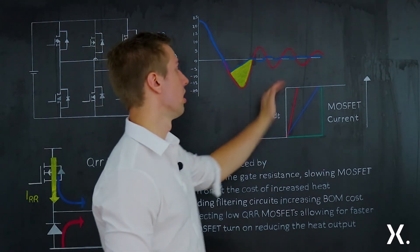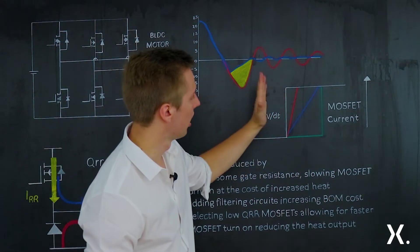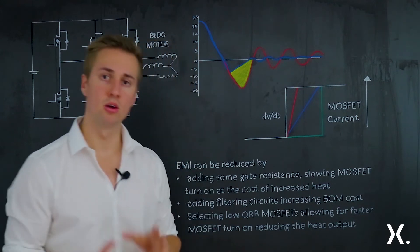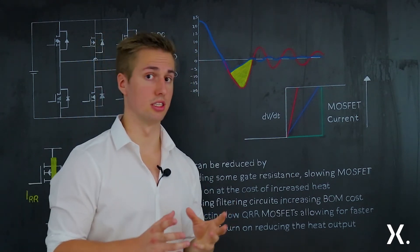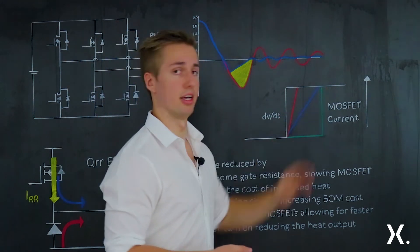Ideally, you want the white line. However, in the real world, you will have more like the red line, which is a slight inclination. If you then add a large gate resistor, which will indeed lower EMC emissions, you will then have something like the blue line.